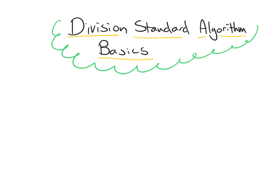I'm going to demonstrate with the problem 96 divided by 4. First, I need to write the problem in the standard algorithm form. I'm going to put the dividend — which I'll underline in green — inside of this half-rectangle, and the divisor — which I'll underline in blue — on the outside. So this problem I would read 96 divided by 4, kind of read it from the inside out.